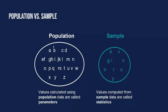Now suppose instead you just randomly select a few letters — these nine letters right here. These nine letters represent a sample because they're a subset of the entire population. And if you were to calculate the average income of these letters, this would be called a statistic. So populations get parameters, samples get statistics — a subtle difference between the two.